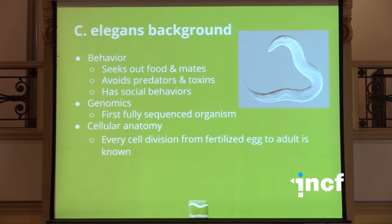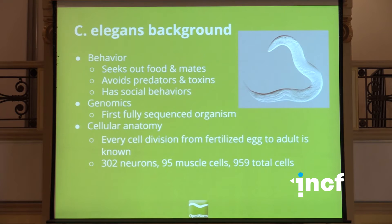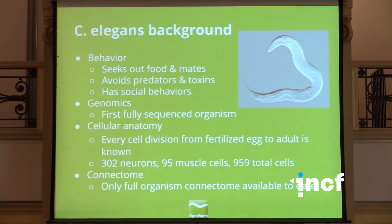It has a nice property called eutely, which is conserved amongst all individuals with the wild-type genome. For the purposes of neuroscience, we know it has exactly 302 neurons, 95 body-wall muscle cells, and a total of 959 cells in its body — very well conserved. And it is the only full organism connectome we have to date down at the EM level. Mitra Cieslowski, who you heard from yesterday, has actually been involved in pushing that connectome further, and it is a continual work in progress.